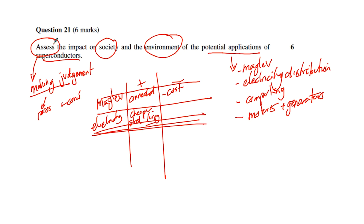Finally though, I then need to explicitly state what I believe is the impact. I might say at the end: based on my assessment of both positives and negatives in society and environment on these applications of superconductors, I come to the conclusion that overall these potential applications will have a positive effect on society and environment, or a positive effect on society and negative effect on environment. It doesn't really matter as long as you make the assessment.